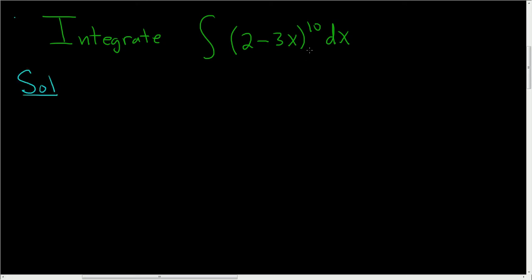So we have something to a power, but it's not just x. So the first choice should be to maybe consider letting this be our u. So if that's u, then du is negative 3 dx.